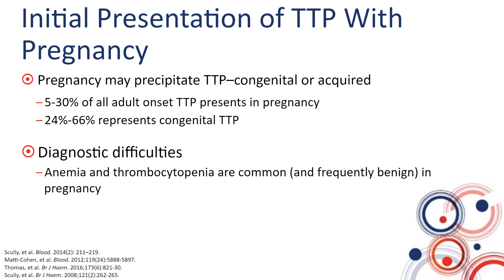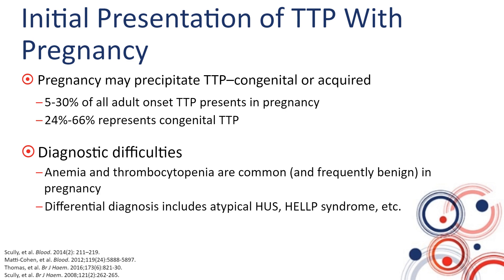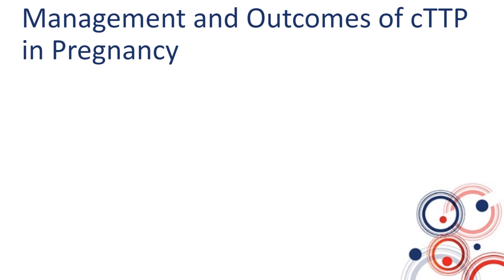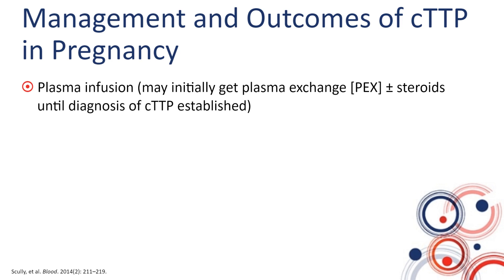Anemia and thrombocytopenia are common and frequently expected as benign in pregnancy, and may not receive as much attention as in a non-pregnant individual. The differential diagnosis of a thrombotic microangiopathy in pregnancy is broad and includes atypical hemolytic uremic syndrome as well as HELLP syndrome, which is why testing for ADAMTS13 activity is key — and this is not readily available at all institutions worldwide. For congenital TTP, plasma infusion is standard of care, though patients may still receive plasma exchange plus immunosuppression until the diagnosis is established.